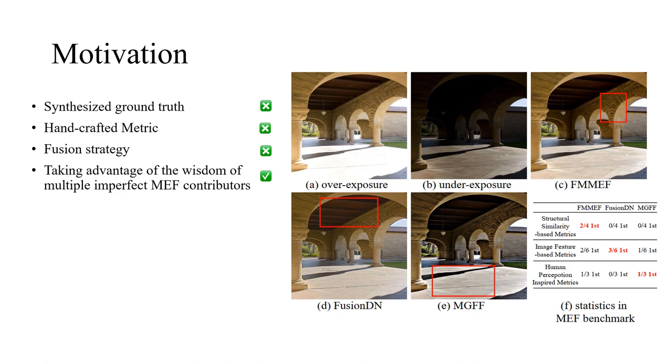The fusion results of FMMEF, Fusion-DN, and MGFF respectively exhibit more meaningful structures in the stone arch, roof, and ground regions, which are highlighted by the red bounding boxes. And they behave well in different metrics.